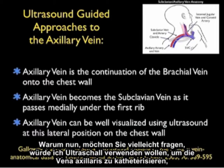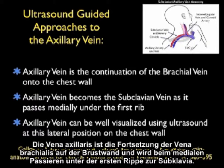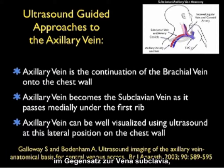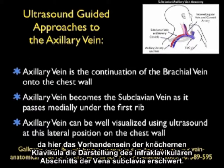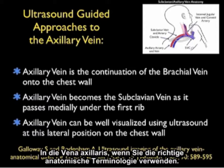Why would you want to use ultrasound to cannulate the axillary vein? The axillary vein is an alternative approach to cannulation of the subclavian vein on the chest wall. It is a continuation of the brachial vein onto the chest wall, becoming the subclavian vein as it passes medially under the first rib. The axillary vein can be well visualized using ultrasound at this lateral position, in contrast to the subclavian vein where the bony clavicle makes imaging of the infraclavicular portion difficult. In effect this is a lateral puncture of the subclavian vein — or more precisely the axillary vein if you're using correct anatomical terminology.